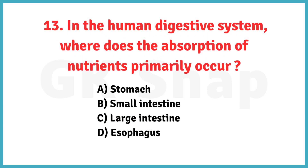In the human digestive system, where does the absorption of nutrients primarily occur? Correct answer is option B: small intestine.